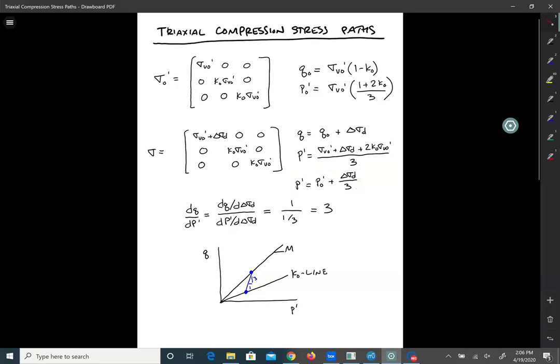So what that means is that our stress path is not vertical anymore. P prime is increasing. And it's important to kind of understand by how much. So what we want to do is calculate this gradient dQ dP prime. All we have to do is compute dQ d delta sigma D and then dP prime d delta sigma D and take the ratio of those two. And we get one divided by one third, which is three. So dQ dP prime for a triaxial compression test is three.